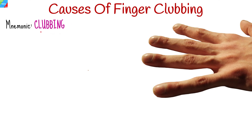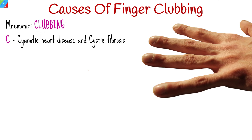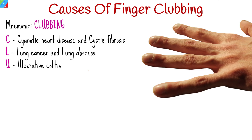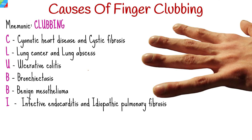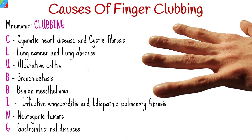The causes of finger clubbing can easily be remembered with the mnemonic CLUBBING: C for cyanotic heart disease and cystic fibrosis, L for lung cancer and lung abscess, U for ulcerative colitis, B for bronchiectasis, the other B for benign mesothelioma, I for infective endocarditis and idiopathic pulmonary fibrosis, N for neurogenic tumors, and G for gastrointestinal diseases.